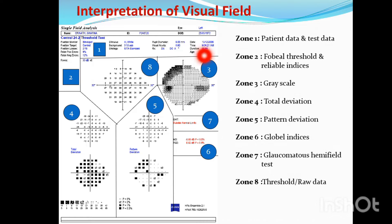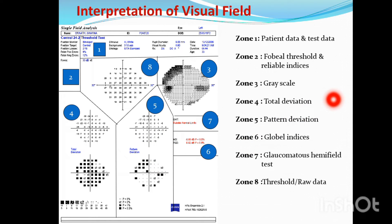Zone 3 is gray scale. This is the gray scale — it shows overall depression. Black areas and darker areas indicate overall depression. So if the patient has a cataract or media opacity, the gray scale will show a lot of depression. The gray scale gives an overall idea, whereas the total deviation and pattern deviation give more specific information about field defects.